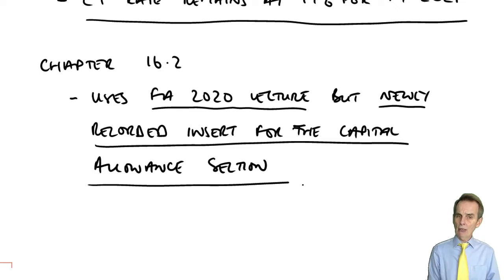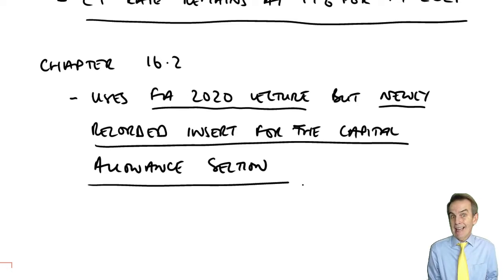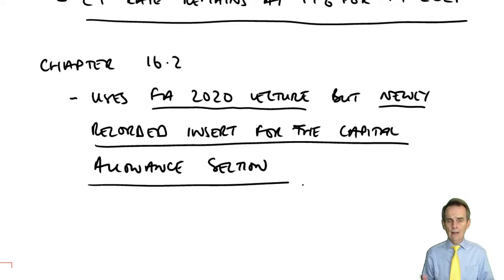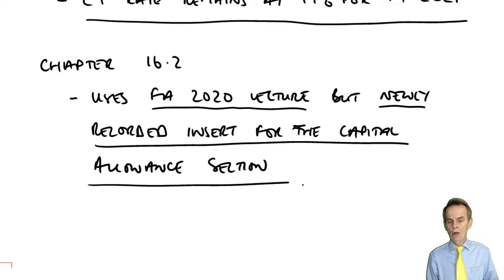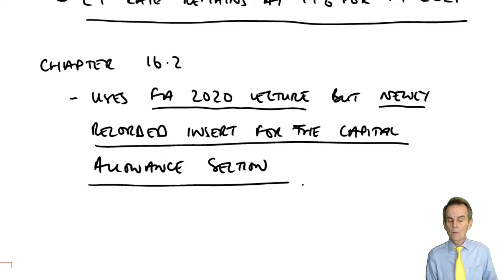For special rate pool expenditure above the £1 million AIA limit, instead of just a 6% annual writing down allowance, in that first year we get a 50% first-year allowance, with a WDA available from the next accounting period onwards. These are huge increases in capital allowances potentially available to companies, designed to induce capital expenditure during a difficult time for businesses - tax encouragement for growth during the pandemic.